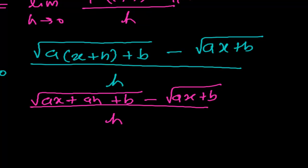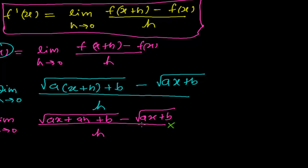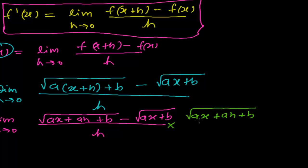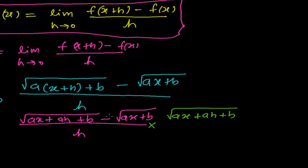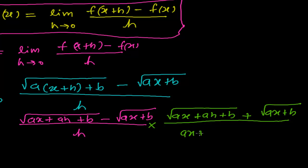To solve this kind of problem, we need to multiply and divide by the conjugate — that is, the same expression but with the sign changed. So we multiply numerator and denominator by root over ax plus ah plus b plus root over ax plus b.